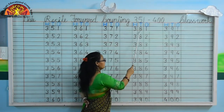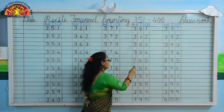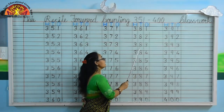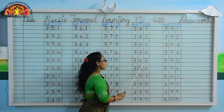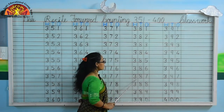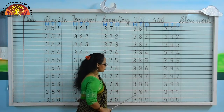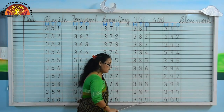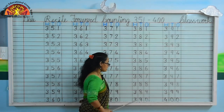381, 382, 383, 384, 385, 386, 387, 388, 389, 390. Kids, 390.